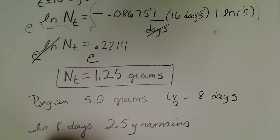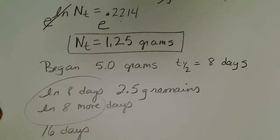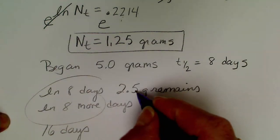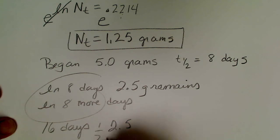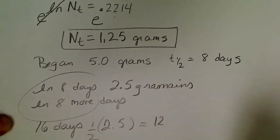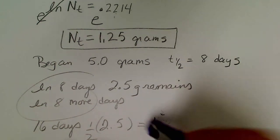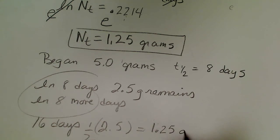Then in 8 more days, which is 16, so there's our total of 16 days, half of 2.5 grams remains. In 16 days, 2.5, if we take half of that we're going to get 12 and a half - 1.25, and that was in grams.